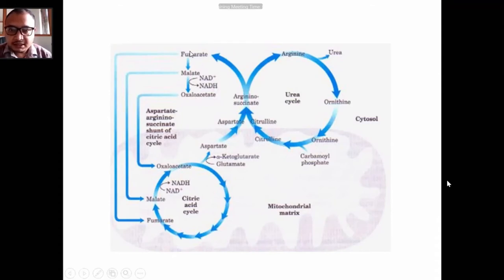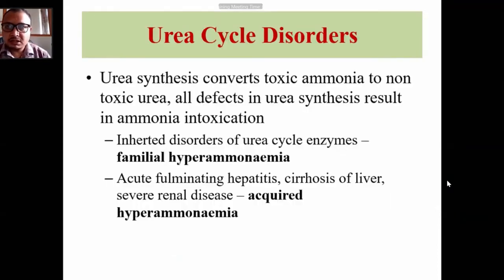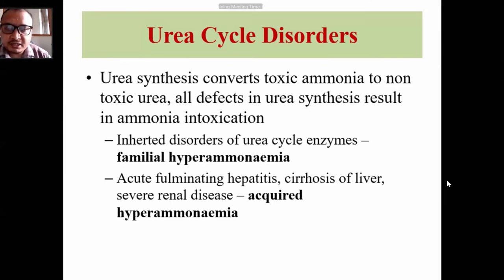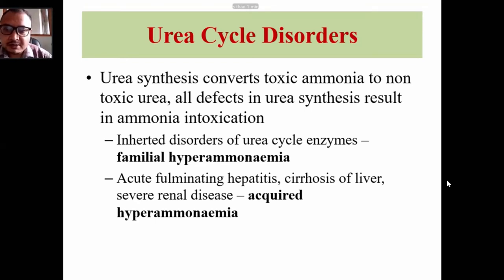Urea cycle disorders occur when urea synthesis is defective. All defects in urea synthesis result in ammonia intoxication. Inherited disorders of urea cycle enzymes cause familial hyperammonemia, while acquired hyperammonemia results from acute fulminating hepatitis or cirrhosis of the liver. Deficiency of urea cycle enzymes leads to inherited familial hyperammonemia, and defects in the liver lead to acquired hyperammonemia.